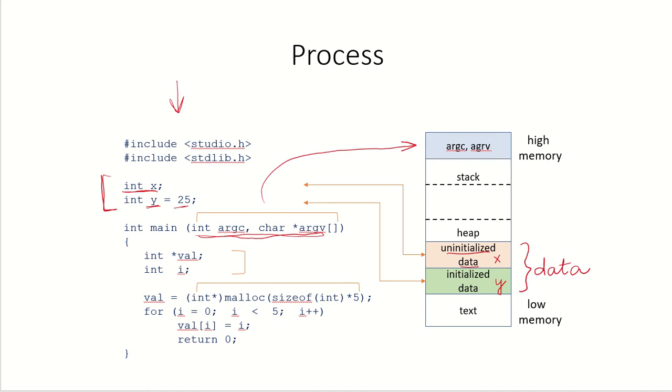Apart from that, we can see that there are some local variables, a pointer val and an integer variable i. These are the local variables and they will be given space in the stack. The stack will be having space for the local variables and any function parameters.